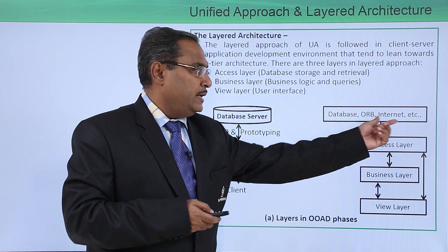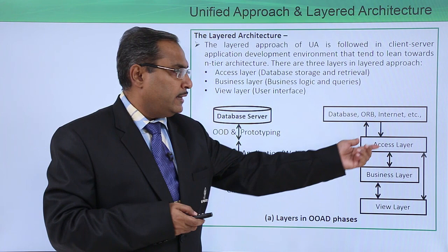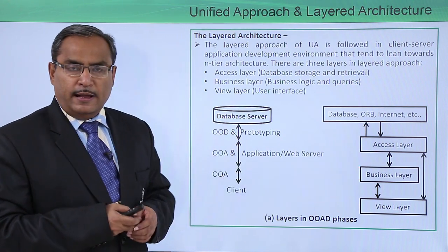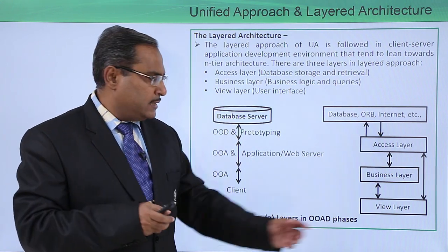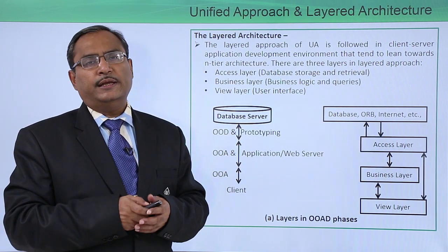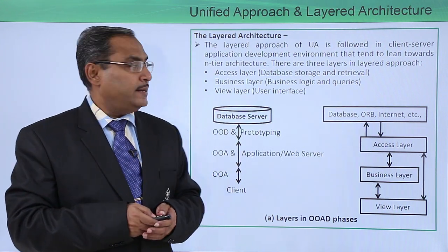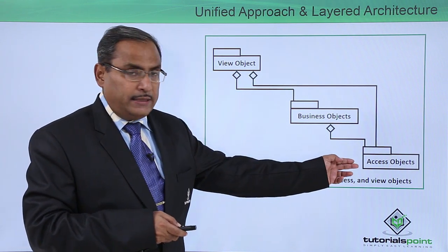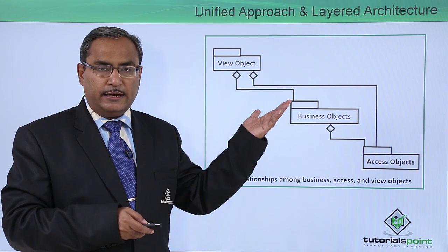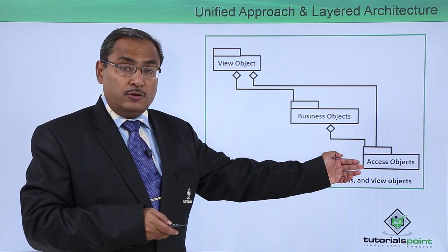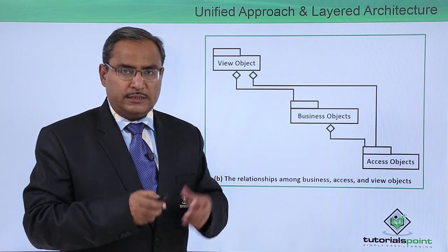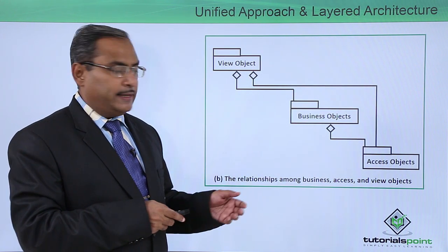In this diagram we have the database ORB and internet. The access layer interacts with the database for efficient database storage and retrieval operations. The business layer holds different business logic, constraints and queries. The view layer is what the client or user interacts with — a convenient interface is provided for them. We have access objects for database access, business objects holding the business logic and constraints, and view objects made available to the client. This is the three-layered approach in case of layered architecture.